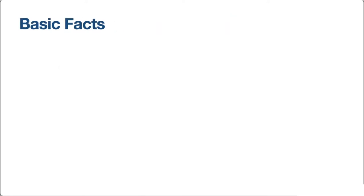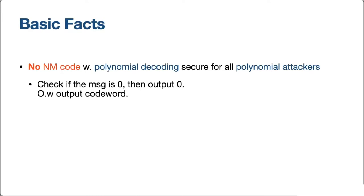Here are some basic facts about non-malleable codes. If decoding can be done efficiently, there's no way to support all polynomial-size tampering functions, because the adversary could decode in polynomial time. If the message equals some predefined message, say all zeros, it just outputs the all-zero string; otherwise it outputs the codeword. By any meaningful notion of non-malleability, this is a valid tampering attack, which is why we must limit the adversary when requiring polynomial-time decoding.